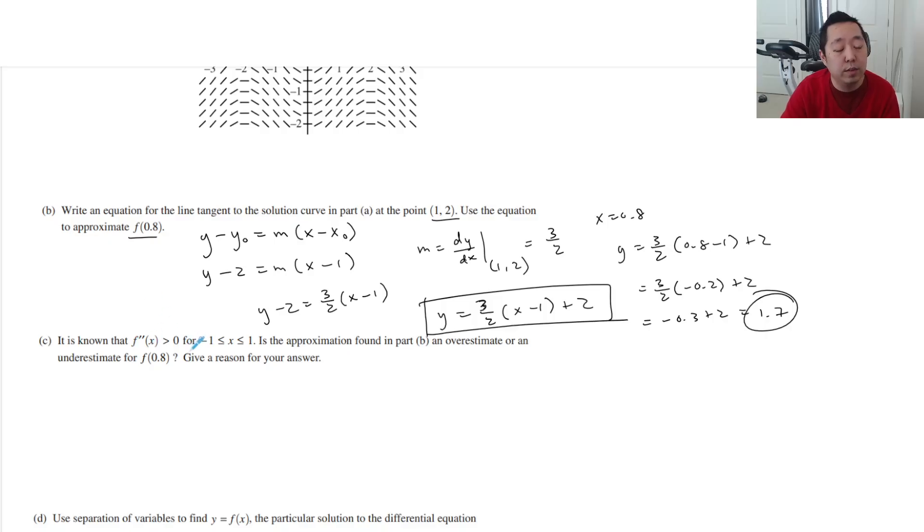It is known that the second derivative is greater than zero in this interval. Is this approximation in part B an overestimate or an underestimate and give a reason for your answer? So second derivative positive means it's concave up. That means if I use a tangent line approximation, I'm going to underestimate the value here. I think that's true even if it's this way. It doesn't matter the direction of the concavity or if it's increasing or decreasing. All that matters is the concavity. Because it is concave up, and I would note the concave means the second derivative is greater than zero, just make that connection.